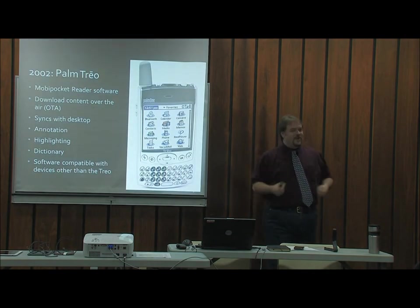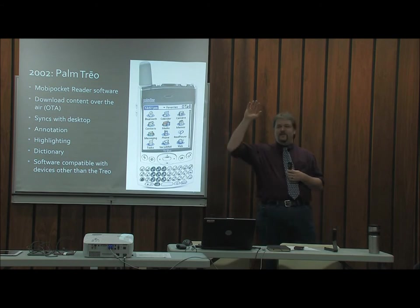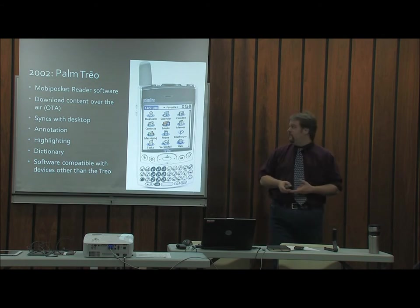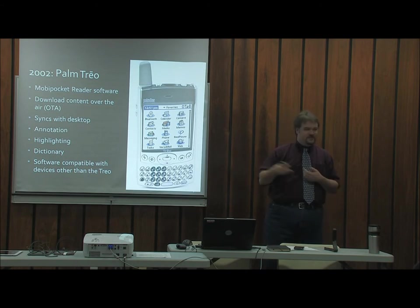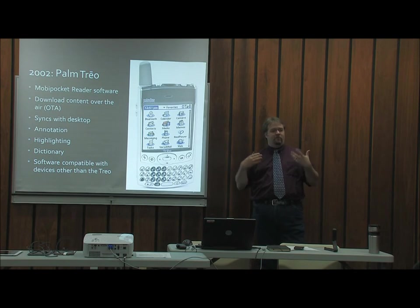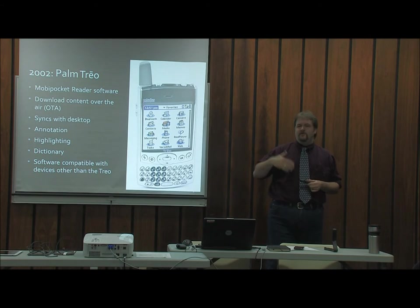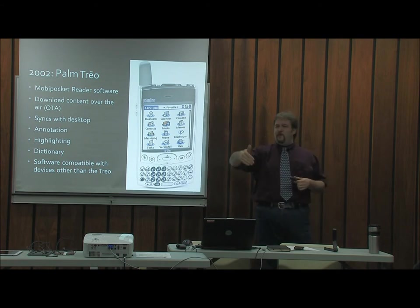Then in 2002, cell phones started to get into the fray with the Palm Trio. This came with software — what we would now call an app — called the Mobi Pocket Reader, which still exists for several platforms. You could download content wirelessly over the air and sync with your desktop. It was not designed as an e-reader per se, but it had reader software on it. You could get Mobi-formatted books, and it had annotation, highlighting, and dictionary features. It was kind of our first multi-platform software that also worked with a mobile device.